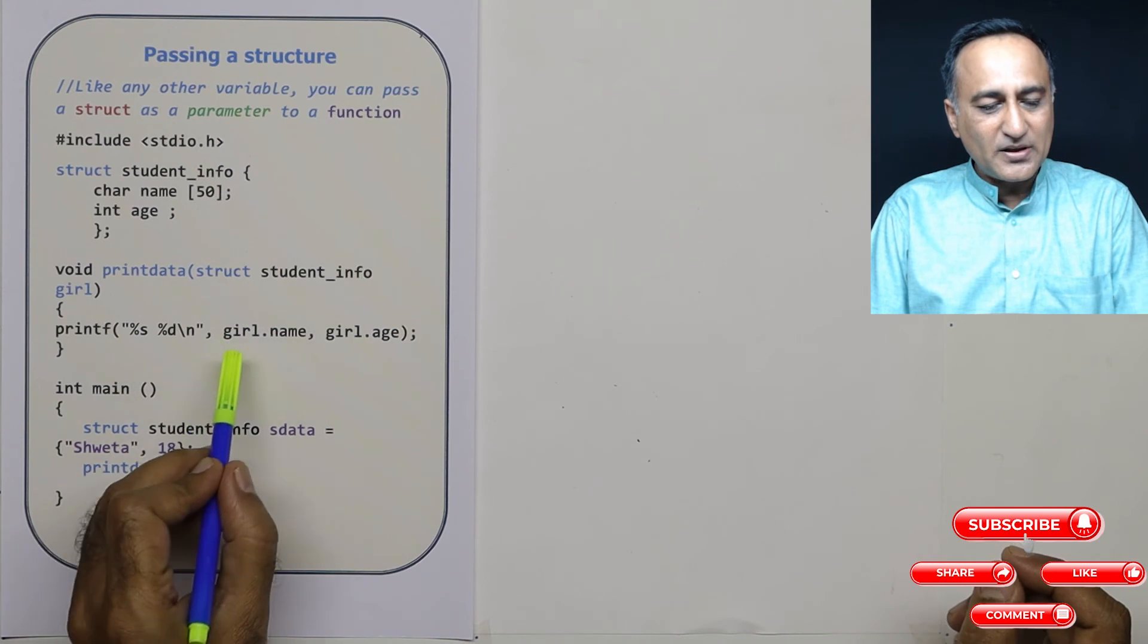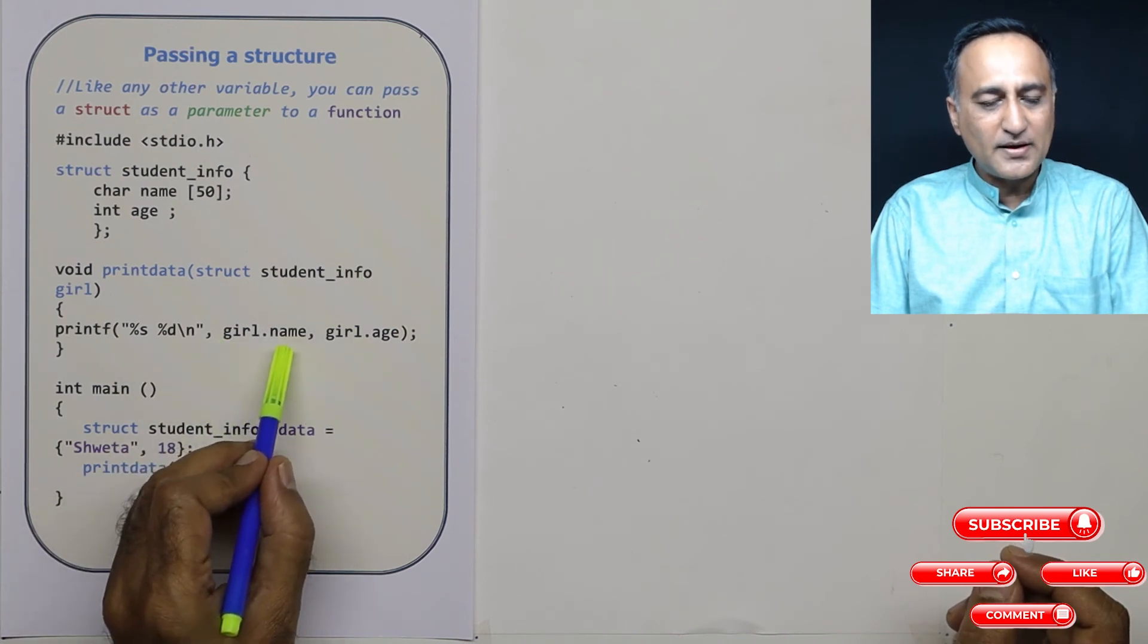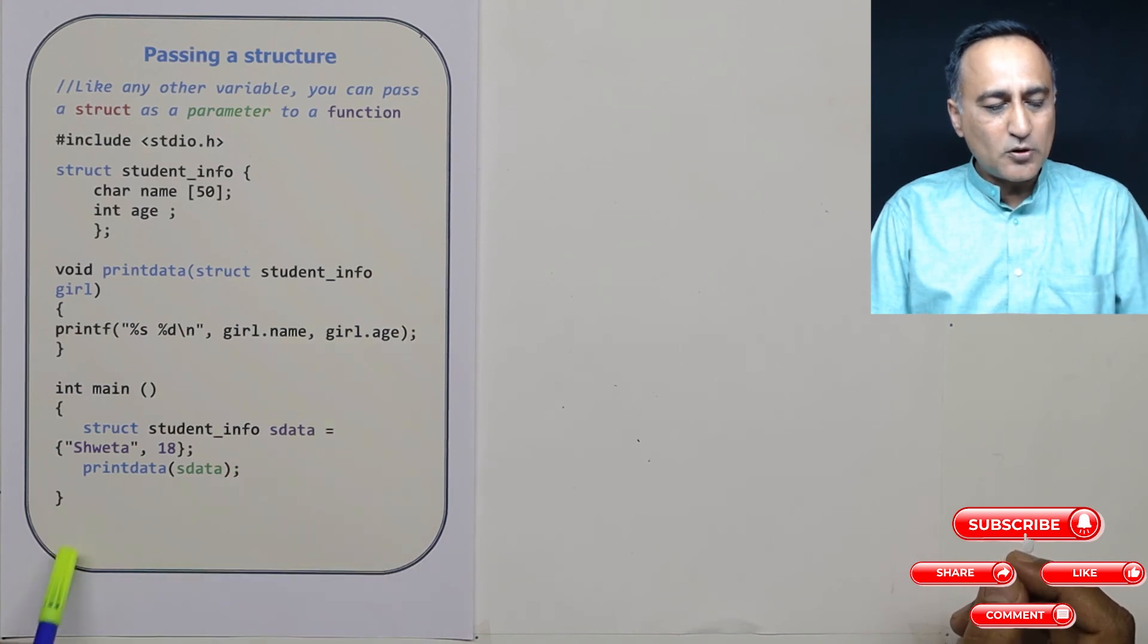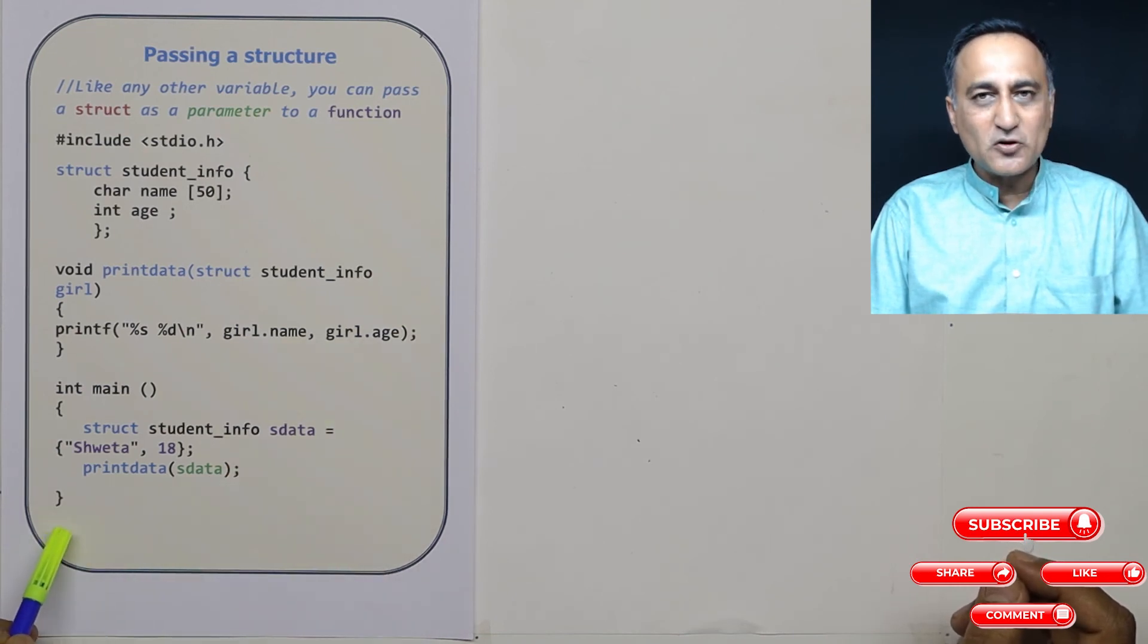Now if I have to print the name of the girl, as you know, girl.name. If I have to print the age of the girl, girl.age. So the output of this is going to be girl.name as Sweta and age as 18.